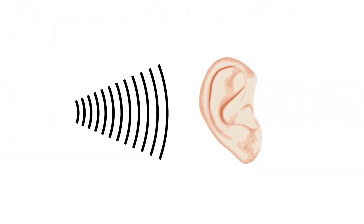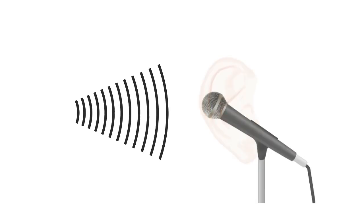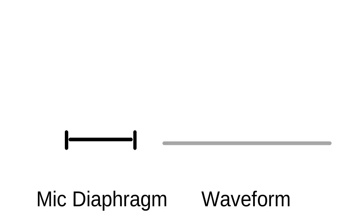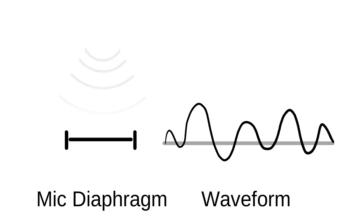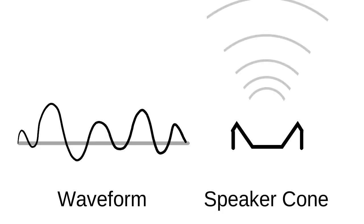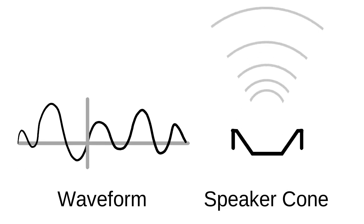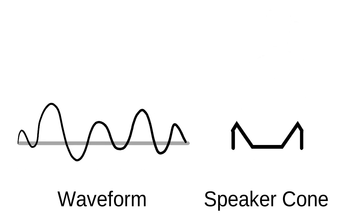Sound is basically air and vibration. The microphone captures that vibration and oscillates. In our audio recorder it comes to a graph — we can read this wave. The speaker works the same way, converting the signal back to air vibration.